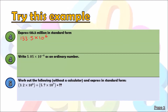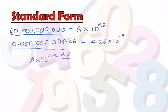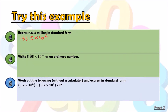However, in standard form, remember that 'a' must be a value between 1 and 10. Since 133 is not between 1 and 10, we need to change it. We rewrite it as 1.335, and since we moved the decimal point two places, we add two more to the power of 6, making it 10 to the power of 8.